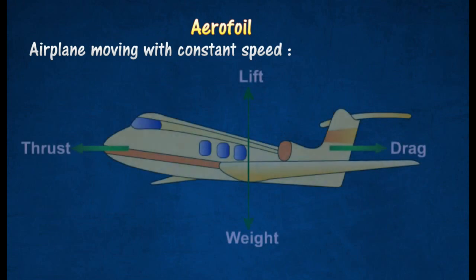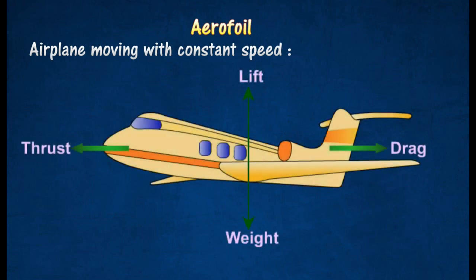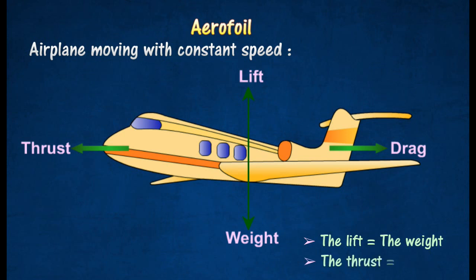When an airplane is moving horizontally at constant speed, the weight of the airplane is balanced by the lift. The thrust is equal to the drag. Thrust is the force produced by the engines, while the drag is a force resisting the motion of the airplane.